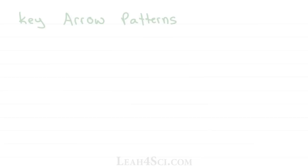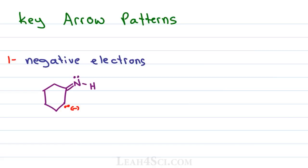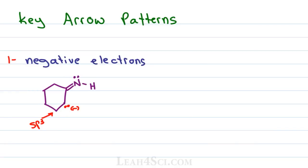Now that you know what not to do, let's look at the key arrow patterns. The first thing I look for is negative electrons. If resonance is the movement of electrons and electrons are negative, they'll be attracted to positive or partial positive — so find the most negative electrons and see where they want to move. For example, given this molecule, I have a choice between the lone pair on nitrogen and the lone pair on carbon, but the lone pair on carbon is negative and nitrogen is neutral, so I start with the negative electrons. The adjacent carbon is sp3 with nothing to kick out, so moving that direction would violate the octet.